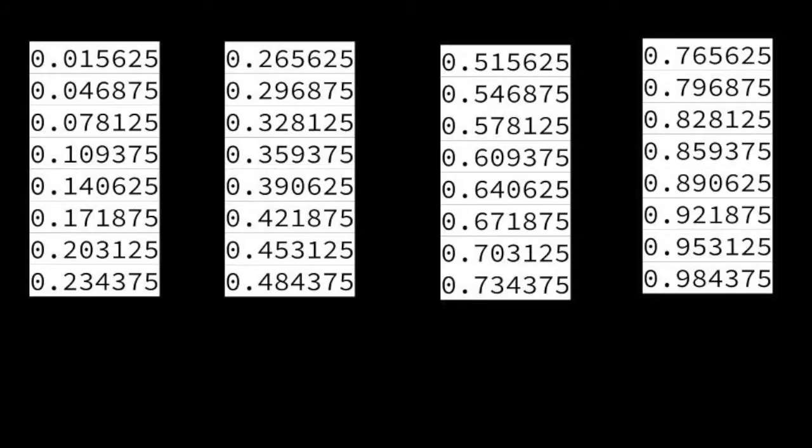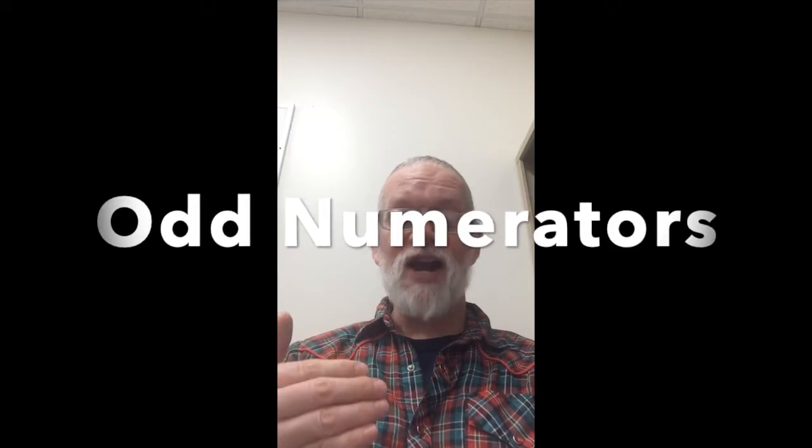The half is the only one with one digit. The quarter measurements have two digits. The eighths have three digits. Sixteenths have four digits. Thirty-seconds have five. Sixty-fourths have six digits.